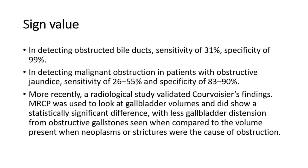For its sign value, in detecting obstructed bile ducts, there is a sensitivity of 31% and specificity of 99%. In detecting malignant obstruction in patients with obstructive jaundice, sensitivity of 26% to 55% and specificity of 83% to 90%. More recently, a radiological study validated Courvoisier's findings — MRCP was used to look at gallbladder volumes and did show a statistically significant difference, with less gallbladder distension from obstructive gallstones seen when compared to the volume present when neoplasms or strictures were the cause of obstruction. That's all for this video. Thank you.